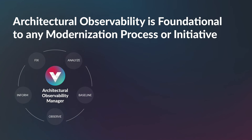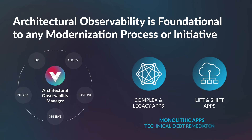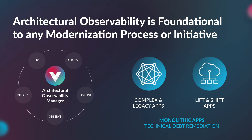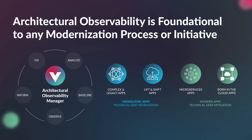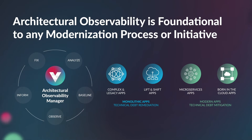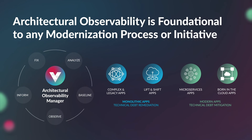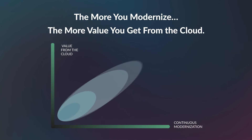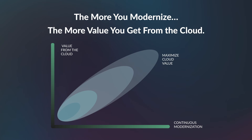Architectural observability is foundational to any modernization process or initiative, and across all types of applications — to remediate technical debt in on-prem and monolithic apps that have been lifted and shifted to the cloud, as well as to mitigate drift and continuously modernize microservices and born-in-the-cloud applications. Cloud migration is a major catalyst for architectural observability, as organizations look to get more out of the cloud: more agility, more innovation, and more scalability. Because the more you modernize, the more value you get from the cloud.